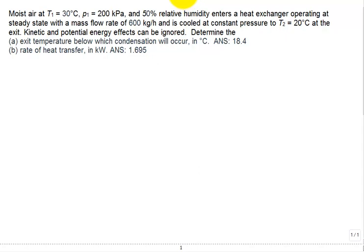All right, so let's look at this problem. We have moist air at 30 degrees C and 200 kPa and 50% relative humidity entering a heat exchanger operating at steady state with a mass flow rate of 600 kilograms per hour. It is cooled at constant pressure until it's 20 degrees C at the exit.